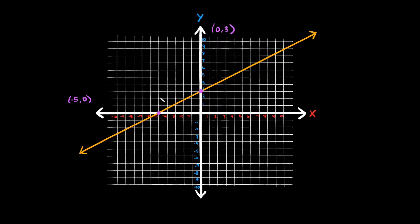The main thing I want you to get from this: looking at the x-intercept, it's at the point negative five comma zero. So your x-intercept will always have a zero for the y-coordinate. And your y-intercept will always have a zero for its x-coordinate. That's a really important concept. So again, whenever you want to find the x-intercept, your y-coordinate has to be zero. And if you want to find your y-intercept, your x-coordinate has to be zero. Keeping that in mind, let's jump into a couple examples.